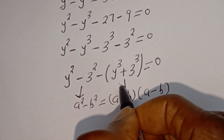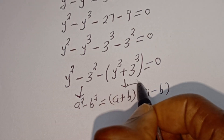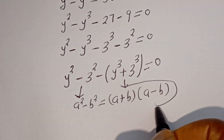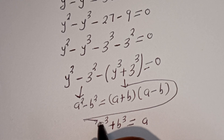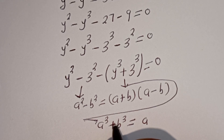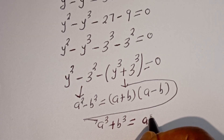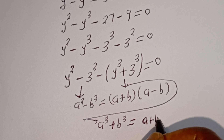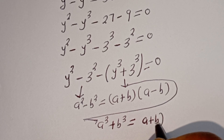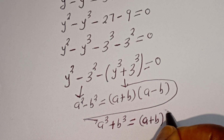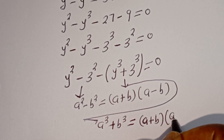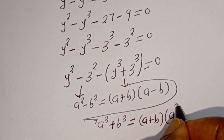And if you have a to the power of 3 plus b to the power of 3, this is equal to a plus b, bracket, a squared minus ab plus b squared.